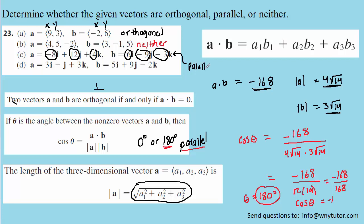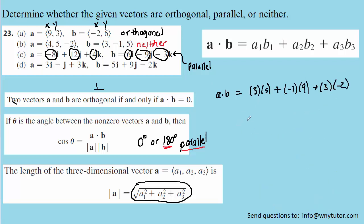For part d, we set up the dot product for the given vectors to first check if they are orthogonal. The components are multiplied together and summed. Note that the y component of vector a is negative 1. When we work this out, we do indeed get 0. Since the dot product of the vectors in part d equals 0, we can confidently conclude that those vectors are orthogonal or perpendicular to one another.